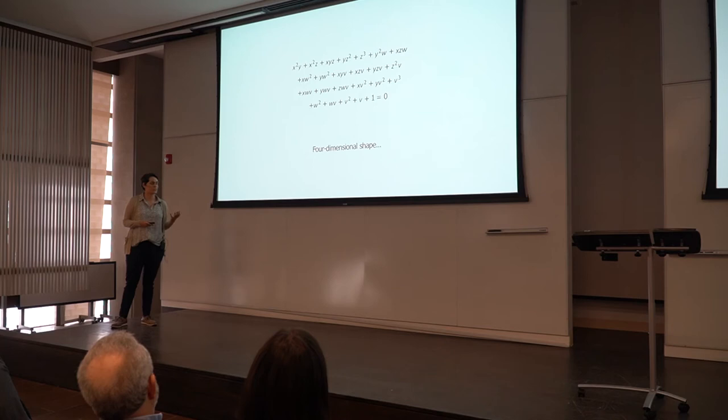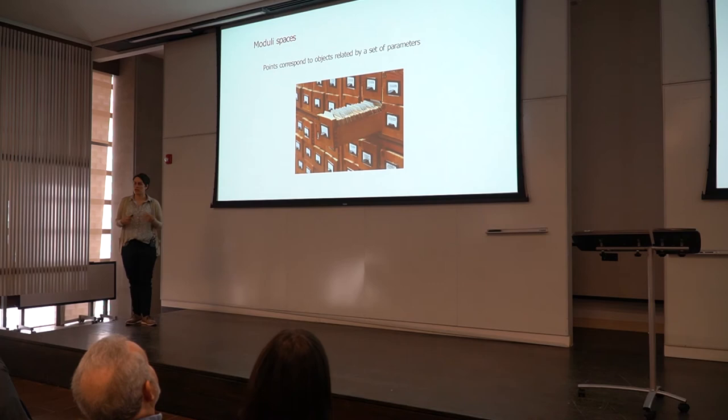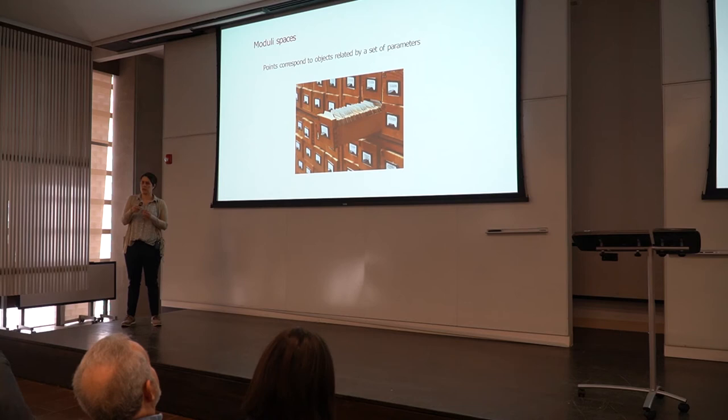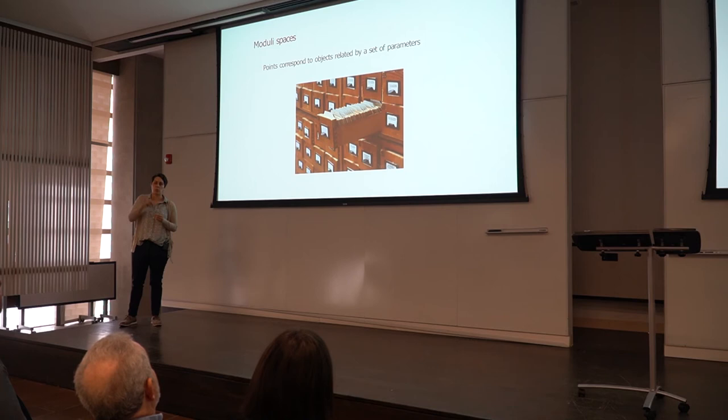The specific kind of objects that I study in my research are called moduli spaces. And these are spaces where the points in the objects correspond to something else. So you can think of this like a library card catalog. The cards in the catalog, each card corresponds to a book in the library. Just like the points in the moduli space correspond to something else.